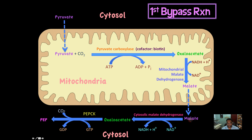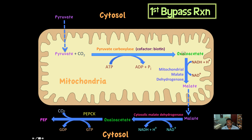Once malate is formed, it leaves the mitochondrial matrix and goes into the cytosol — its sole purpose was to get into the cytosol. Once malate is in the cytosol, it is reconverted to oxaloacetate using cytosolic malate dehydrogenase, and NAD+ is converted to NADH plus H+. This is an oxidation reaction — in the matrix, oxaloacetate is reduced to malate; in the cytosol, malate is oxidized to oxaloacetate.